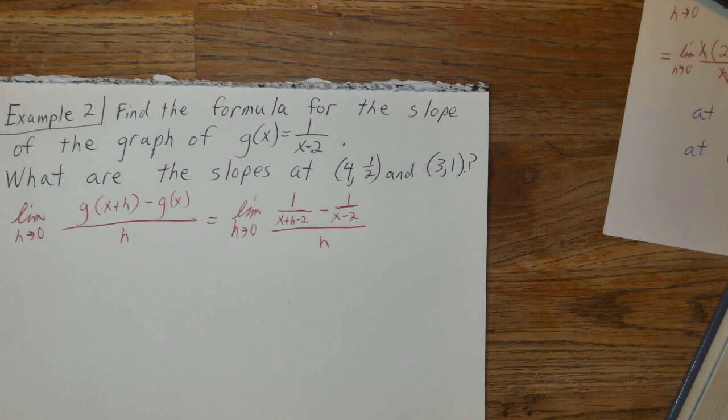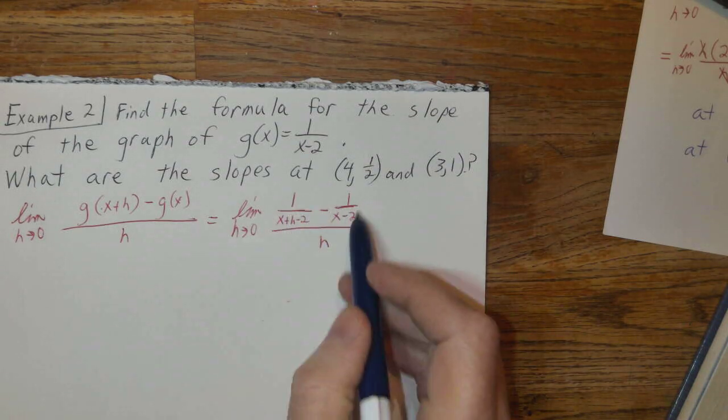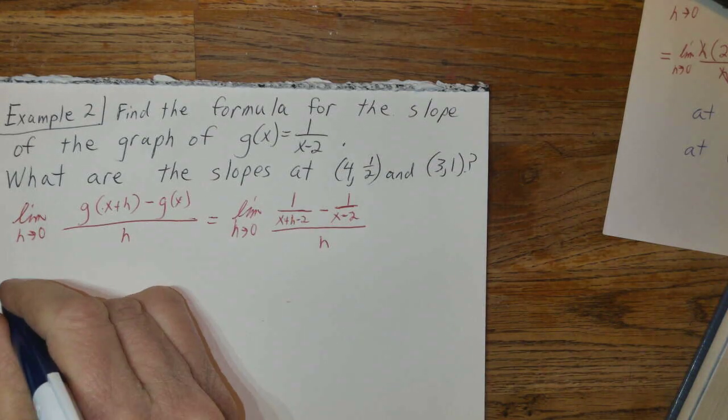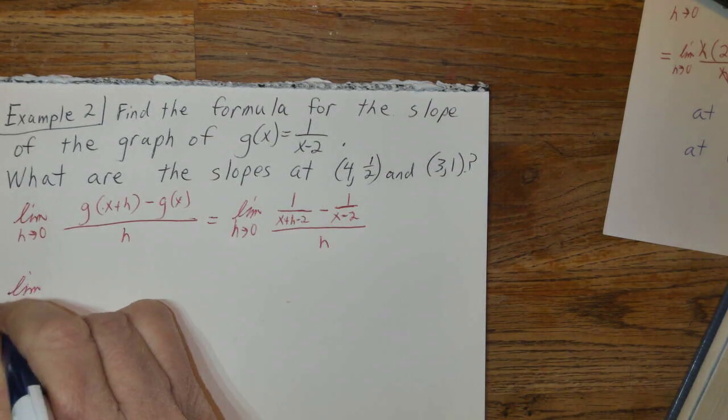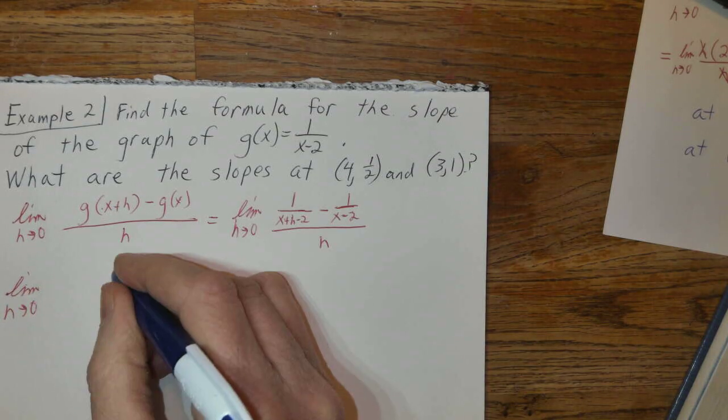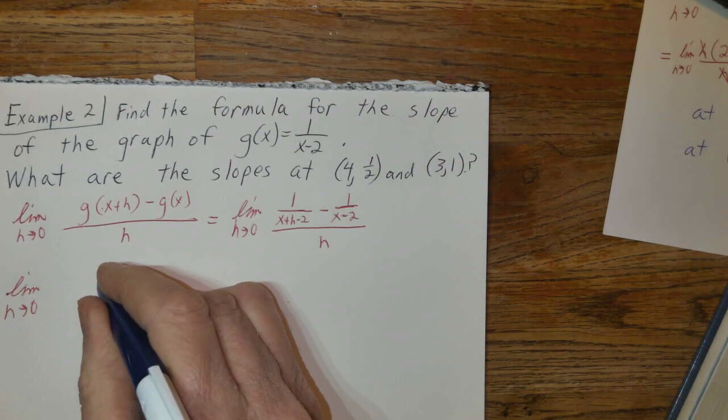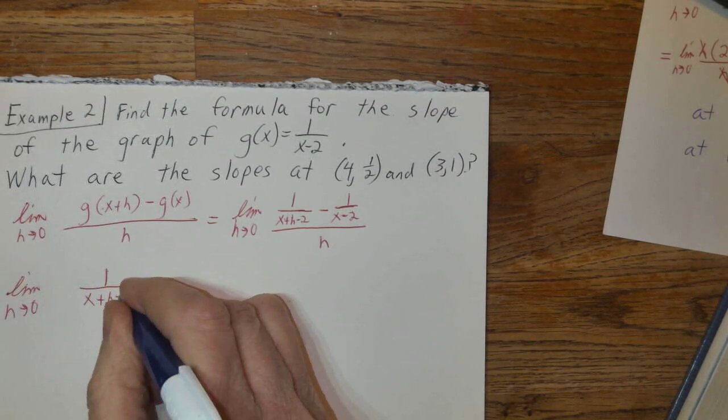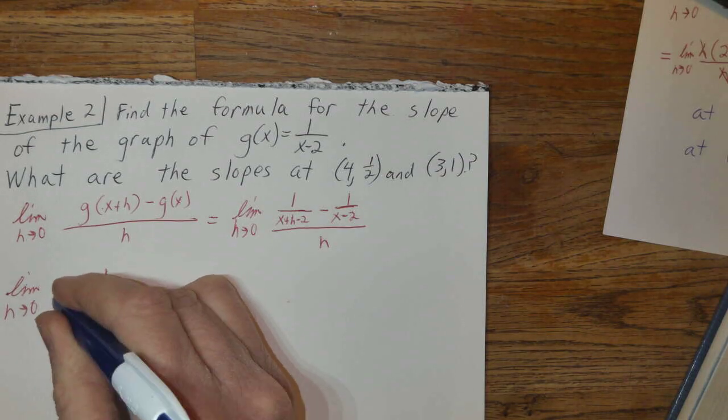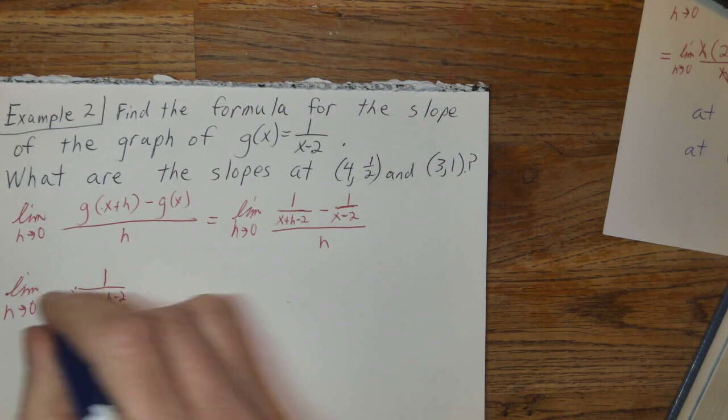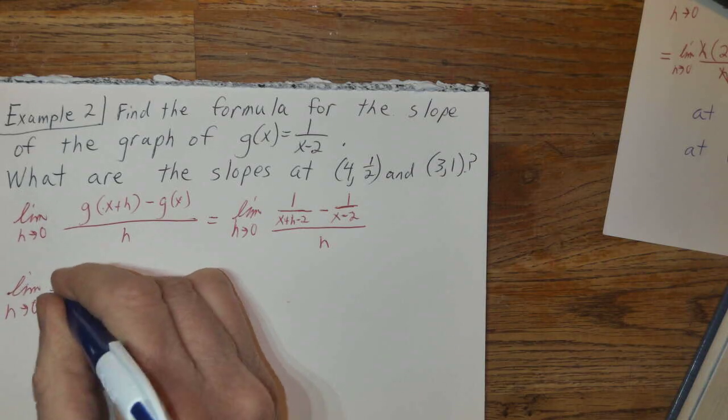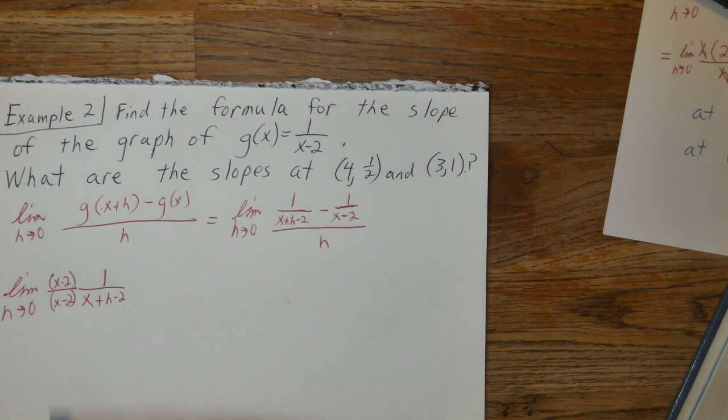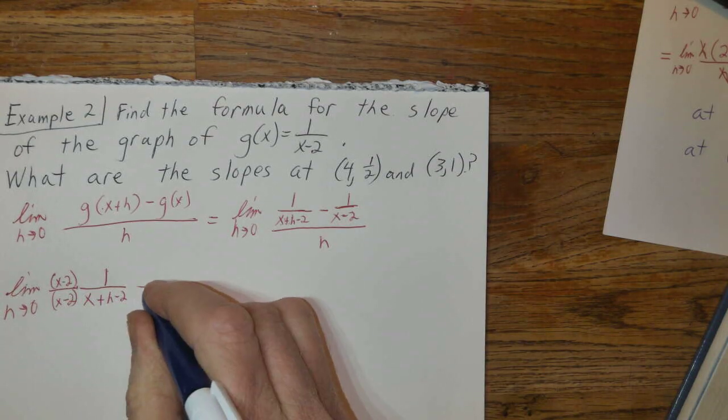My job here is to make these two into one fraction. So, limit as h approaches 0, I'm going to take this one and multiply by (x-2)/(x-2), because this doesn't have the x-2 in the denominator.